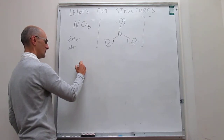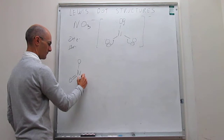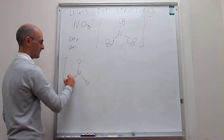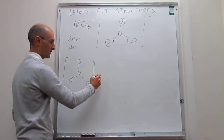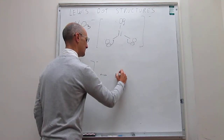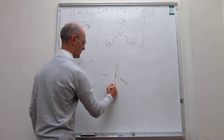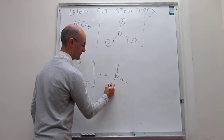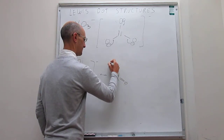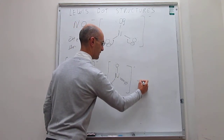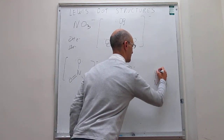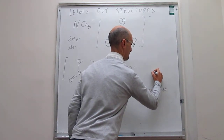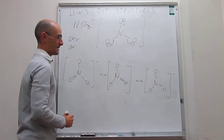Let's draw all three resonance structures in turn. In the first, the double bond is with the lower-left oxygen. In the second, the double bond is with the lower-right oxygen. In the third, the double bond is with the top oxygen. Every atom in each of the three structures satisfies the octet rule.